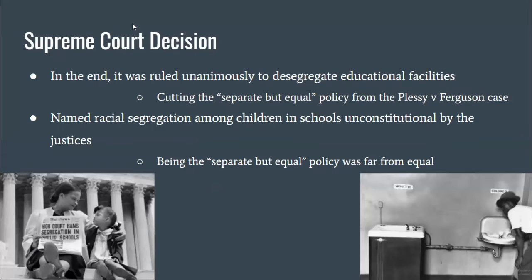The Supreme Court decision: in the end, the justices of the Supreme Court unanimously voted to desegregate public schools, ultimately ending the previously legalized separate but equal policy that had given legal permission of racial segregation as long as services were equal — established in the 1896 Plessy v. Ferguson case. The reasoning behind this decision was that they now saw racial segregation among children in schools as unconstitutional, with the separate but equal policies found far from equal through the evidence and arguments in the case.